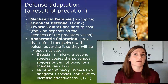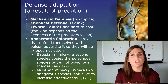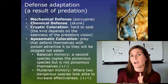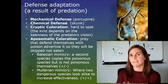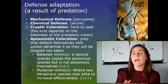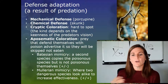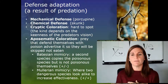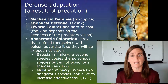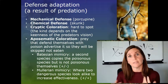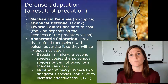Some prey use cryptic coloration — 'cryptic' meaning hard to read, like a cryptic person who is difficult to understand. Cryptic coloration means the animal blends in very well with its surroundings. A stick bug is a good example: it is hard to see because it blends into its environment and is well camouflaged.